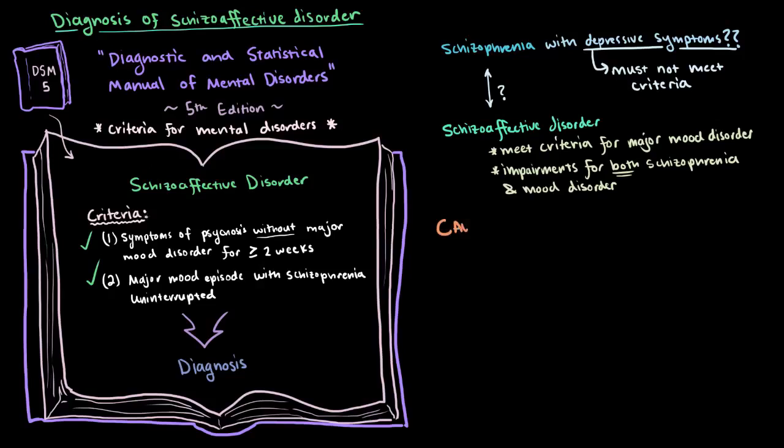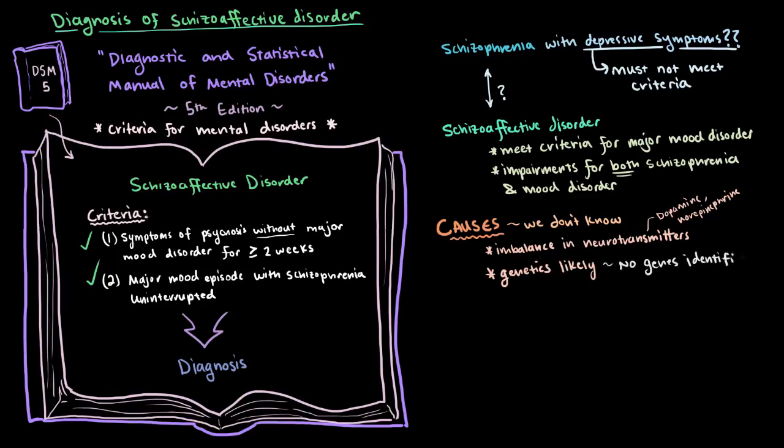So what causes schizoaffective disorder? By now you might be able to guess that we don't exactly know, but it's thought to involve an imbalance in several neurotransmitters in your brain, like dopamine or norepinephrine. Although genetics likely plays a role, there have yet to be any genes identified. But with that said, we know that having family members with schizophrenia, bipolar disorder, or schizoaffective disorder itself all increases your risk of developing schizoaffective disorder.